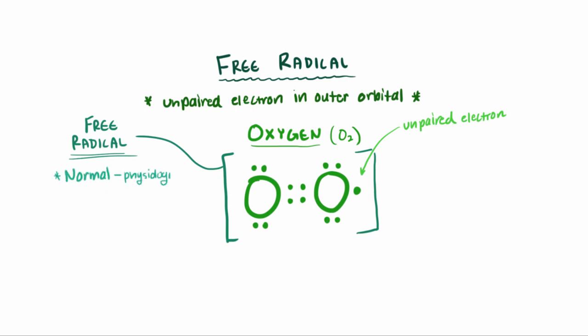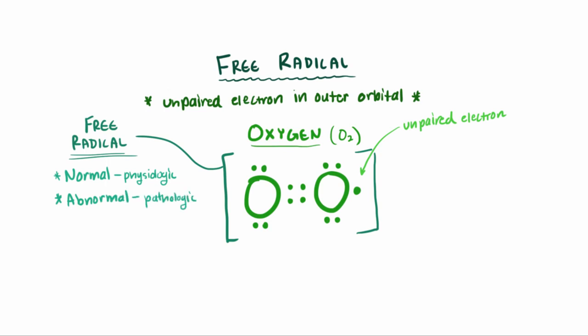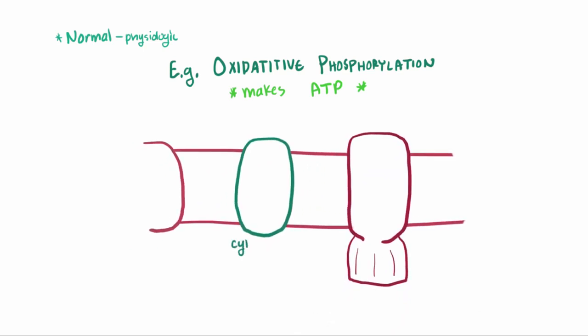Now free radicals are generated both normally in physiologic conditions and abnormally in pathological conditions. Physiologically, so we're talking like normal conditions, it can happen during oxidative phosphorylation, which we know is this super important process in our cells to help make ATP. During this process, you've got this molecule called cytochrome C oxidase, or sometimes it's just known as complex 4. This molecule transfers electrons to oxygen, and oxygen gladly accepts those electrons. And this in turn causes the mitochondrial matrix to pump protons out. And this creates our proton gradient and drives the production of ATP.